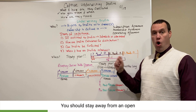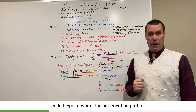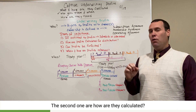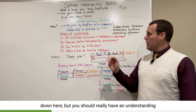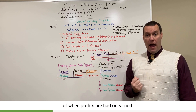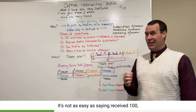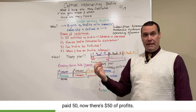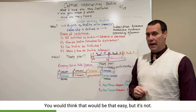The second item is: how are underwriting profits calculated? You should have an understanding of how profits are calculated when they are earned. It's not as easy as saying received $100, paid $50, so there's $50 of profits. You would think it would be that easy, but it's not.